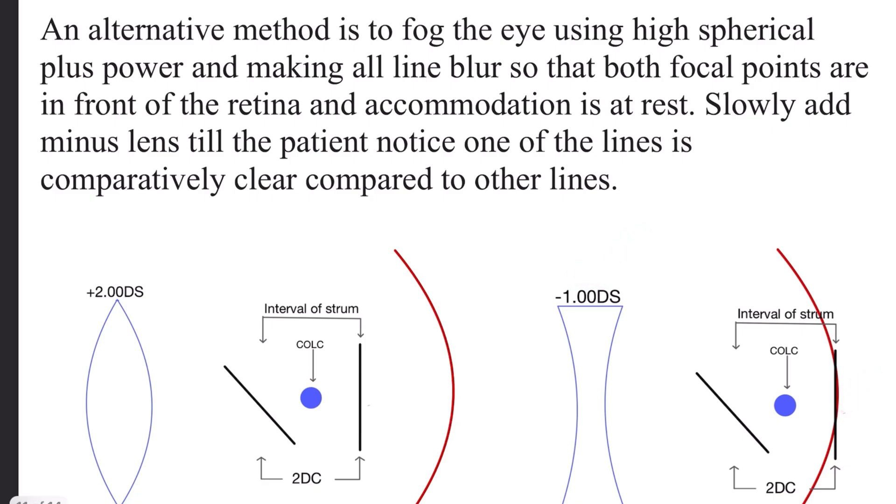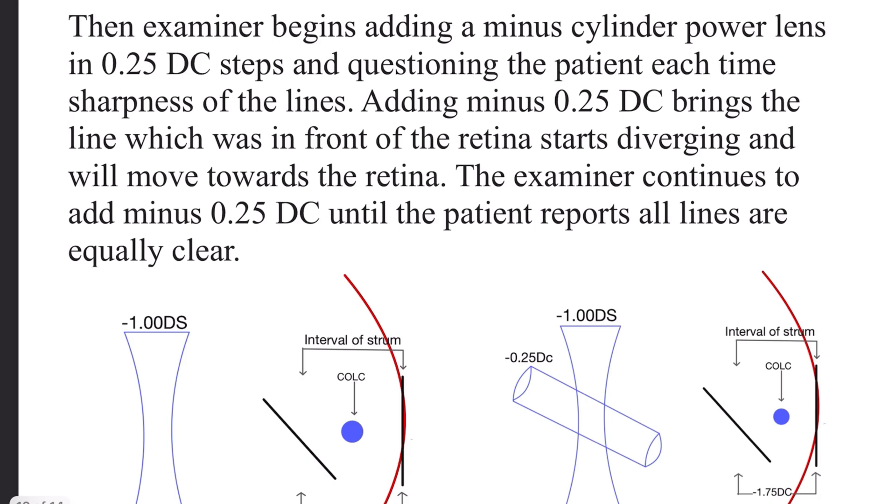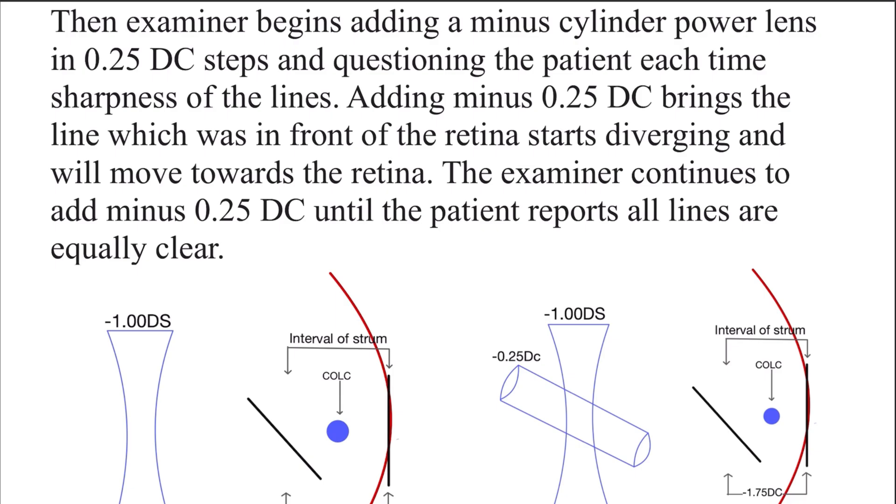At this point, the examiner begins adding minus cylinder power lens in 0.25 diopter cylinder steps and questioning the patient each time about the sharpness of the lines. Adding minus 0.25 diopter cylinder brings the line which was in front of the retina diverging and will move towards the retina.